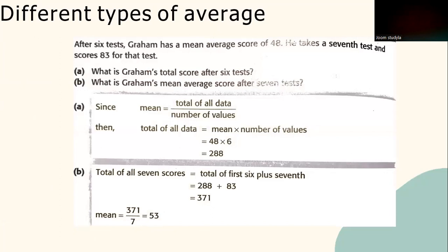Given the question: find Graham's total score after 6 tests. After 6 tests, Graham has a mean average score of 48. He then takes a 7th test and scores 83. To find the total score after 6 tests, use the formula: total of all data equals mean multiplied by number of values. So mean is 48 multiplied by 6, which gives a total score of 288 after 6 tests.